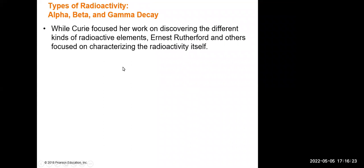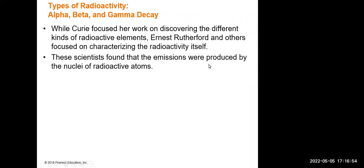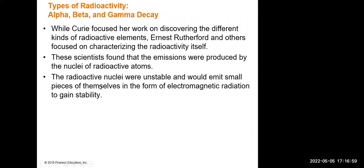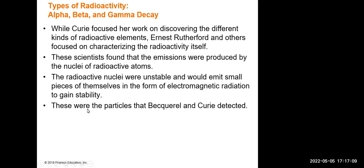Depending on the particle emitted from the nucleus, we have common types of radioactivity: alpha, beta, and gamma decay. While Curie focused on discovering radioactive elements, Ernest Rutherford and others focused on characterizing the radioactivity itself. These scientists found that emission was produced by the nuclei of radioactive atoms — unstable nuclei that emitted small pieces of themselves to gain stability.